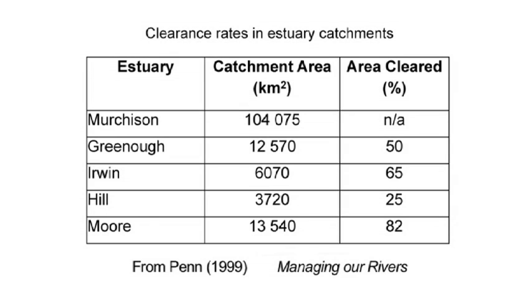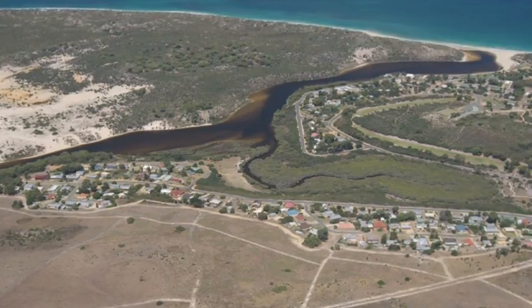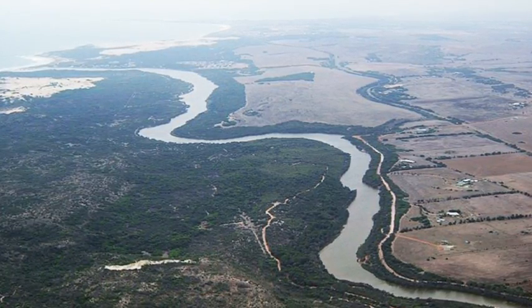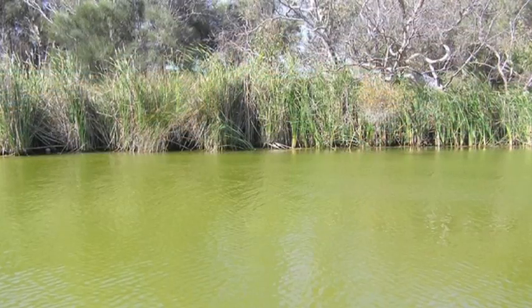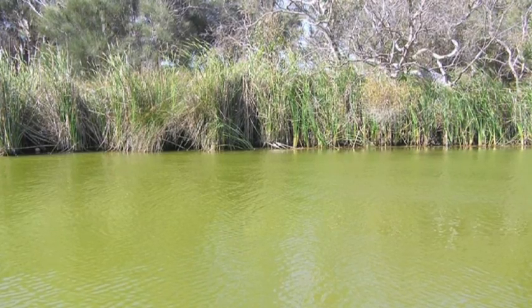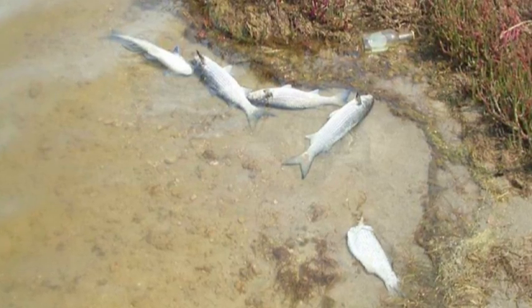Clearing vegetation in the catchment also causes the groundwater table to rise, increasing the rate of groundwater flow into the estuary. When catchments are cleared for cropping, excess fertilisers can be carried by both surface water runoff and groundwater flow to the estuary, causing a build-up of nutrients known as eutrophication. This can upset the ecological balance of the estuary by increasing the growth of algae, and in extreme cases can cause harmful algal blooms. When this algae dies, it is broken down by bacteria, which in turn depletes the surrounding water of dissolved oxygen, causing fish kills.